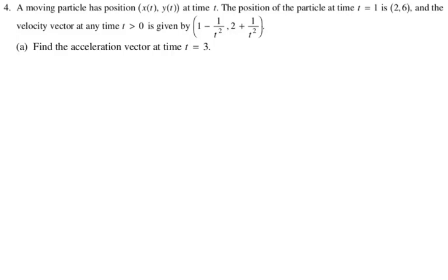A particle has position x of t, y of t at time t. The position of the particle at time t equals 1, so not t equals 0, t equals 1, is 2, 6. And the velocity vector at any time t greater than 0 is given by the quantity 1 minus 1 over t squared, comma 2 plus 1 over t squared. So this is a parametric slash vector type problem.